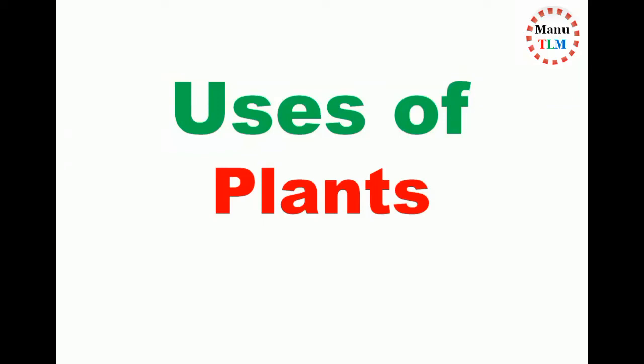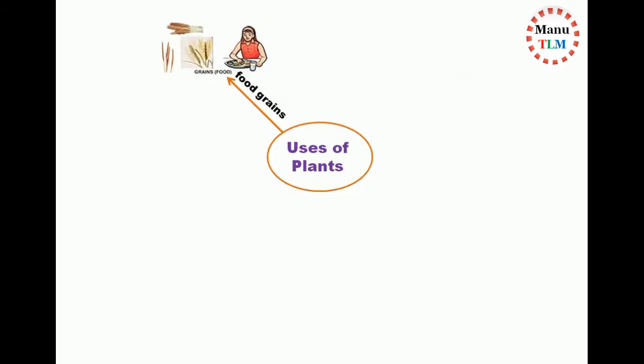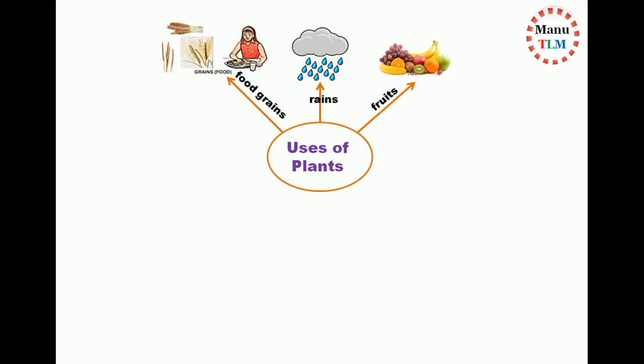Uses of plants. Plants use food grains. Plants use rain. Plants use fruits.